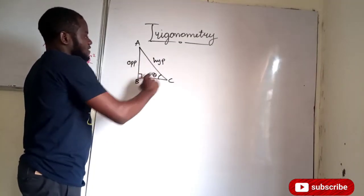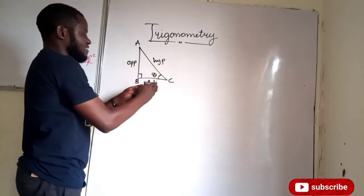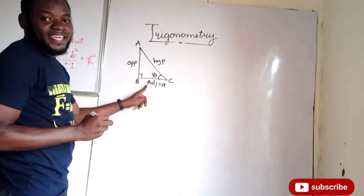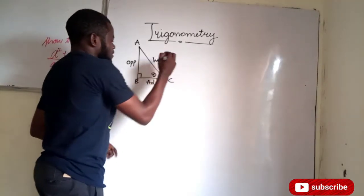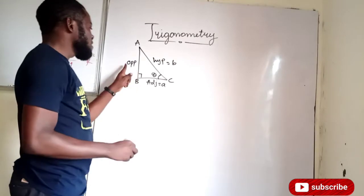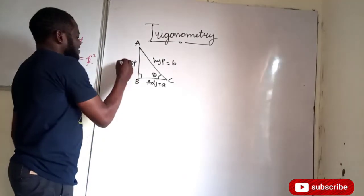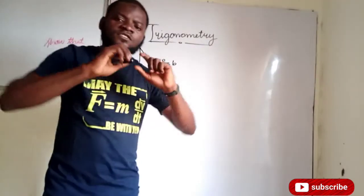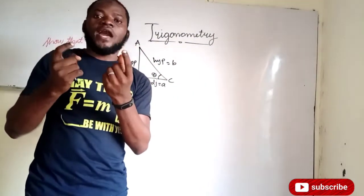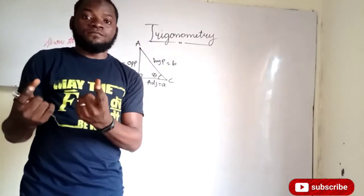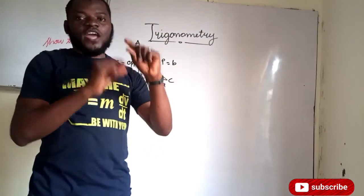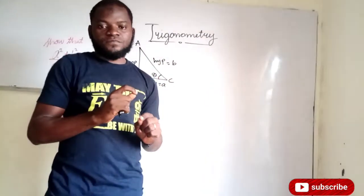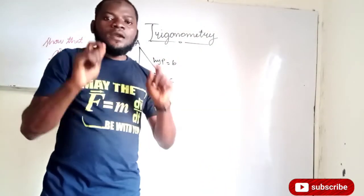Now let us give each side a name. After knowing that this is the hypotenuse, this is the adjacent, and this is the opposite — the hypotenuse will be small letter B because that is where capital letter B is facing. This side will be small letter A because that is where capital letter A is facing. Pause the video and tell me what this place will be — it is small letter C because that is where capital C is facing. Trig ratio is the ratio of the sides of a right angle triangle with respect to the angle you are considering.